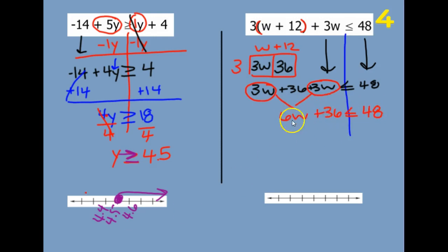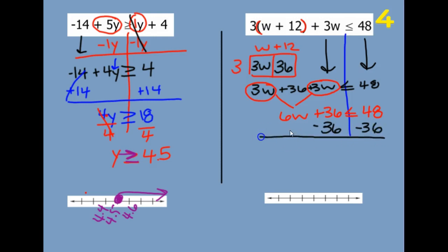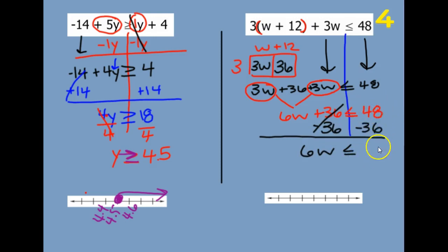So we need to get rid of just our number. The opposite of adding 36 would be subtracting 36. Those eliminate, and I have 6W is less than or equal to. We need to subtract these: 8 minus 6 is 2, and 4 minus 3 is 1, so we have 12.